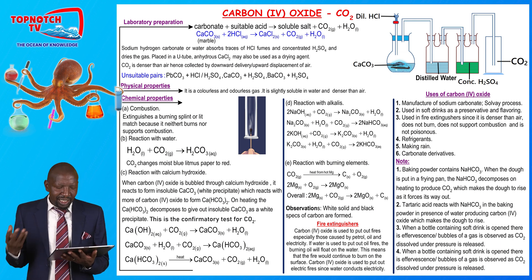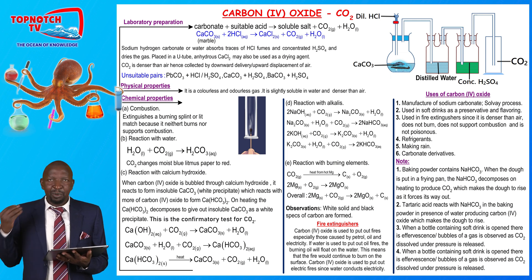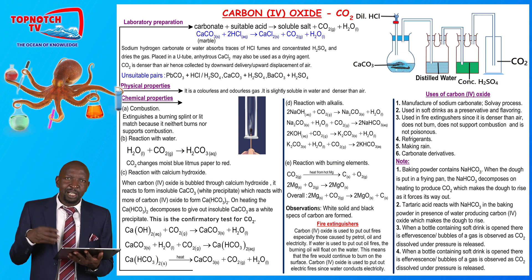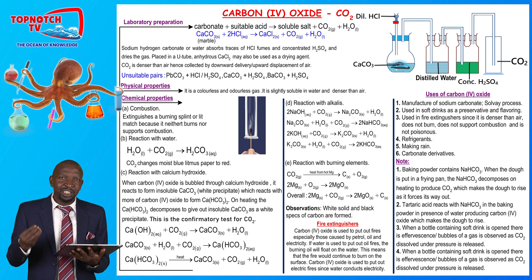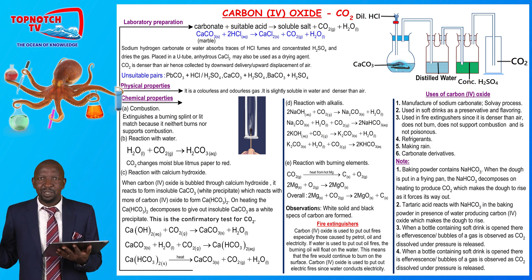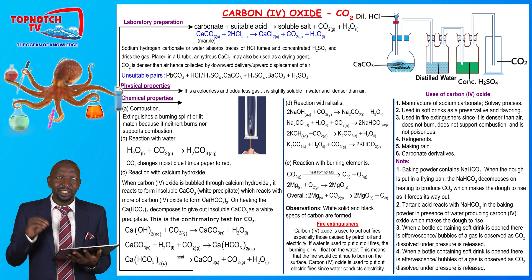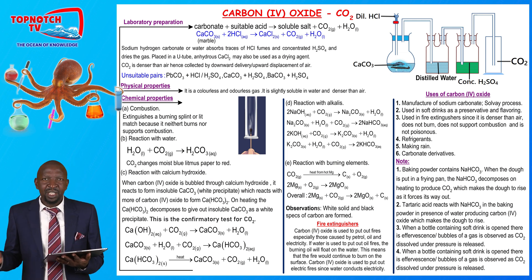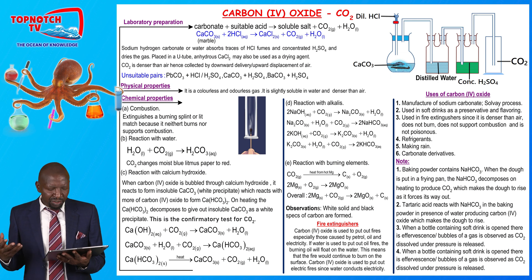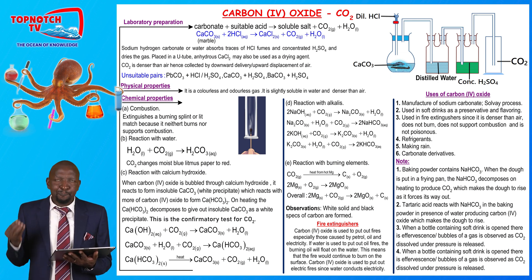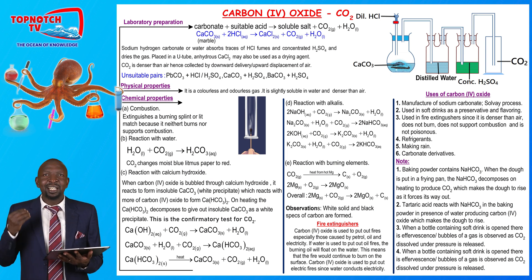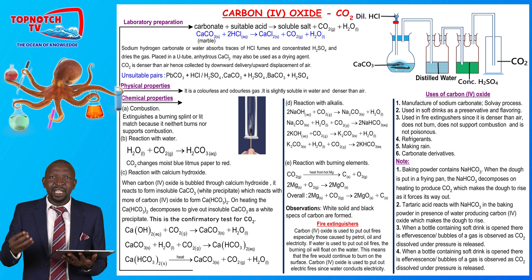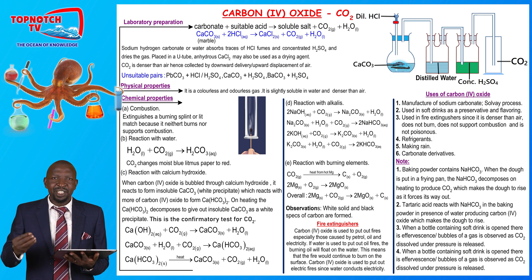Reaction with alkalis: carbon dioxide will react with any alkali to form the corresponding carbonate and water. Sodium hydroxide plus carbon dioxide gives sodium carbonate plus water. Potassium hydroxide plus carbon dioxide gives potassium carbonate plus water. Calcium hydroxide plus carbon dioxide gives calcium carbonate plus water. But if you react any alkali with excess carbon dioxide, you get the corresponding metal hydrogen carbonate.